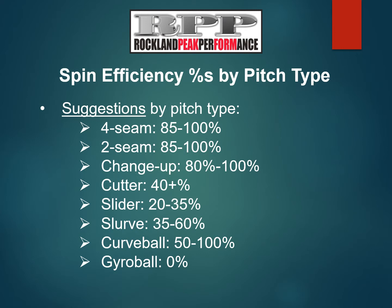Changeups should be 80–100% — once again, the greater the better. Cutters at 35–60% should get more vertical movement than sliders at 20–35%. Curveballs vary a great deal, but generally they should be at greater percentage numbers than slurves to get the necessary depth. Depending on the curveball and the arm slot, 50–100% is a reasonable range. We have seen the full range with effective velocity and depth on curveballs. Slurves generally sit somewhere between a slider and a curveball. Of course, all these percentages are in relation to the gyro ball at 0% spin efficiency.